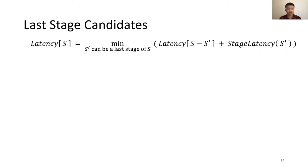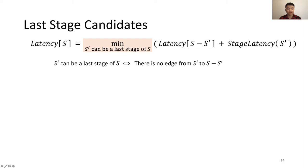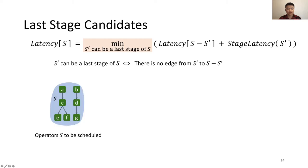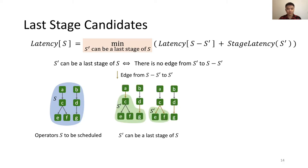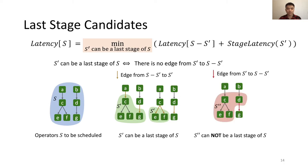How can we determine whether a stage S' can be a last stage of S? We find that S' can be a last stage of S if and only if there are no edges from S' to S minus S'. This is because we must finish all operators before the last stage first. For a valid example, all edges between S' and the rest are from S minus S' to S'. As a counter-example, S' is not a valid last stage if there is an edge from S' to S minus S', which violates the dependency.